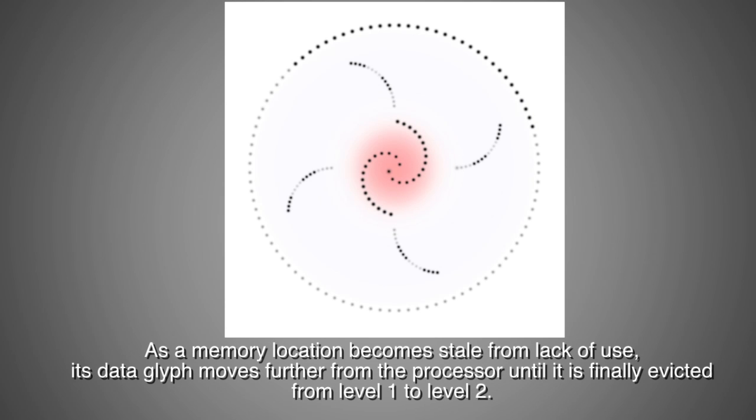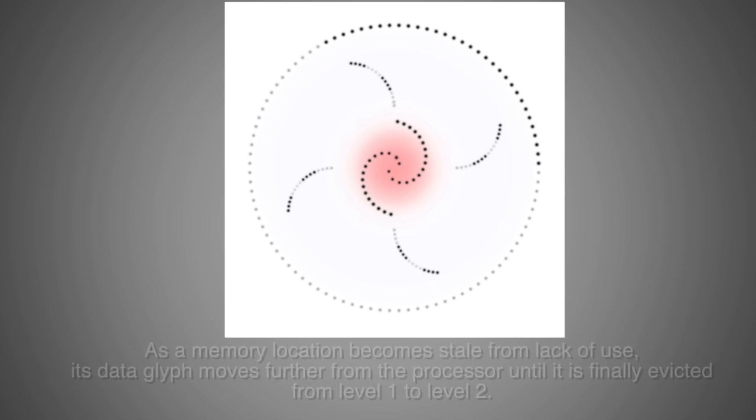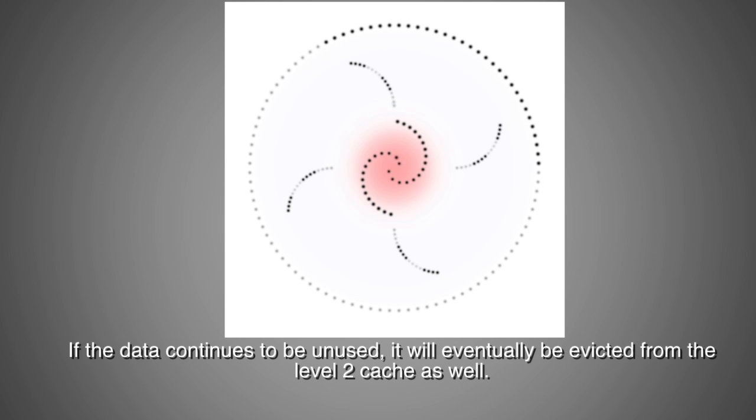As a memory location becomes stale from lack of use, its data glyph moves further from the processor until it is finally evicted from level 1 to level 2. If the data continues to be unused, it will eventually be evicted from the level 2 cache as well.